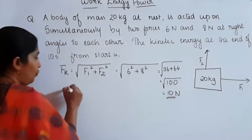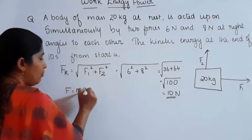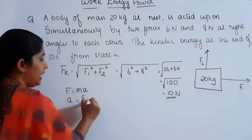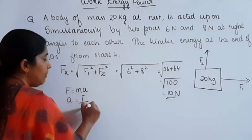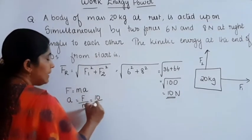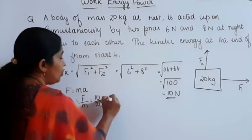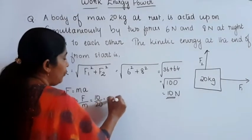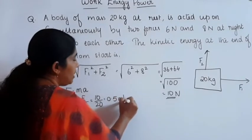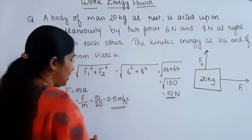According to Newton's second law, F equals MA, so acceleration A equals F divided by M. F is 10 Newton and mass M is 20 kg, so A equals 0.5 meter per second squared. That is the acceleration of this mass.